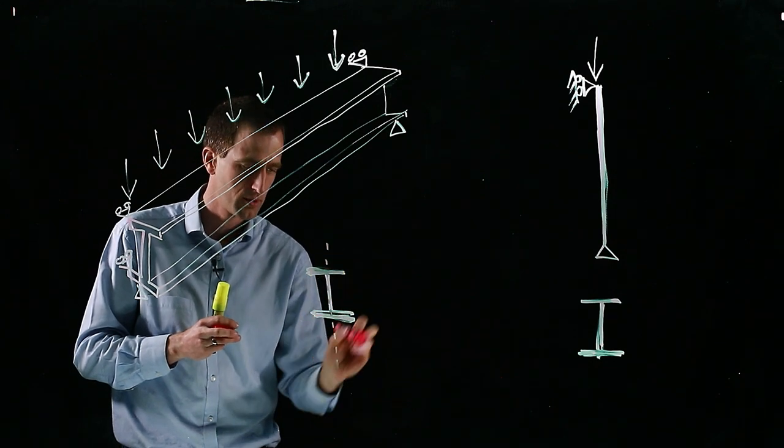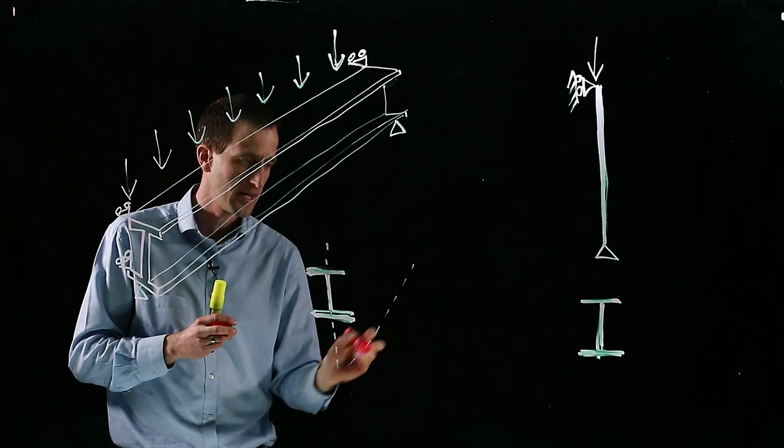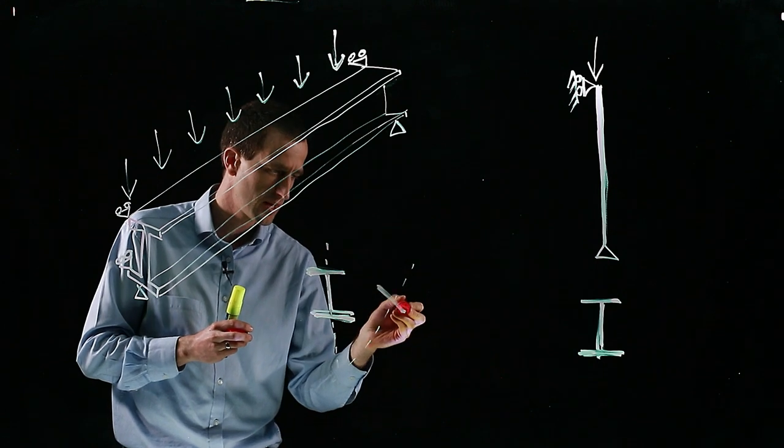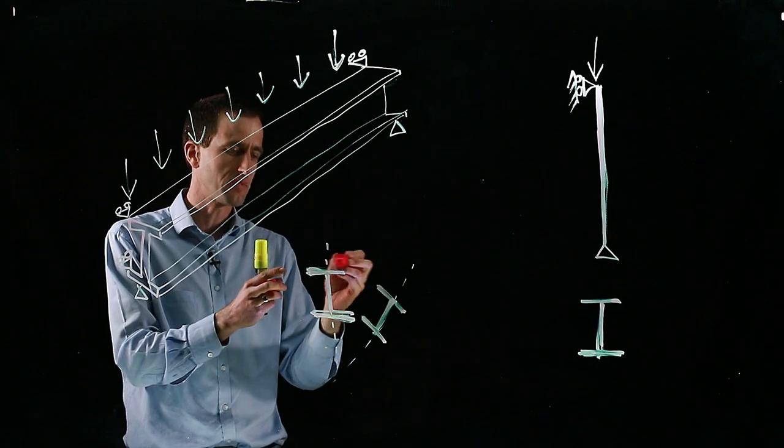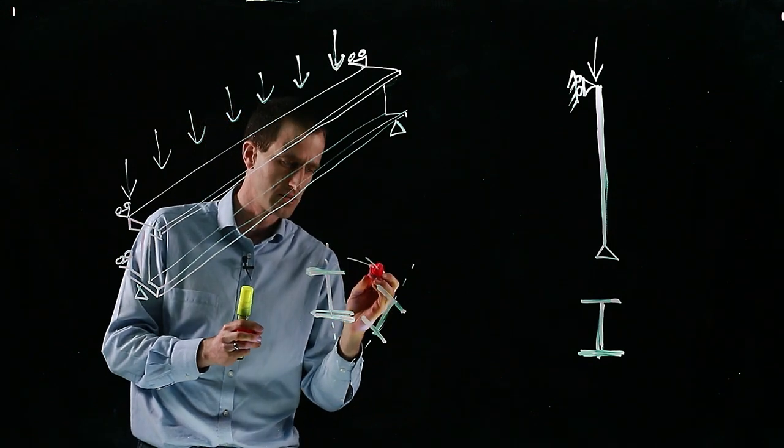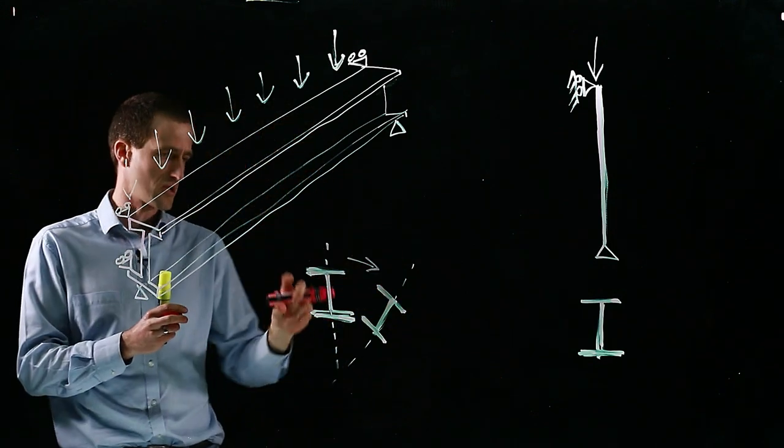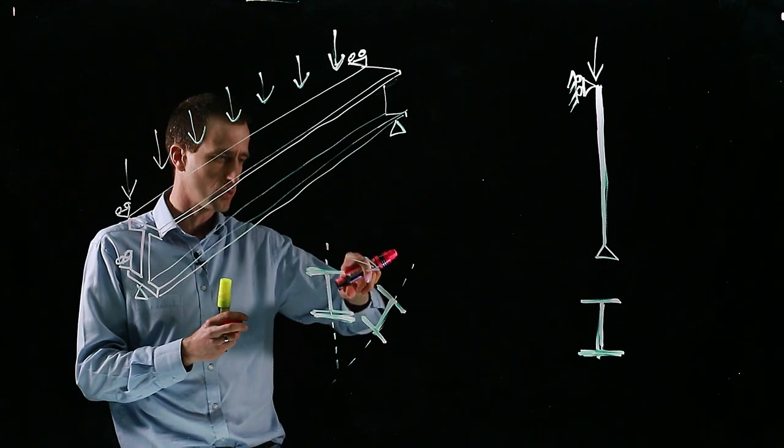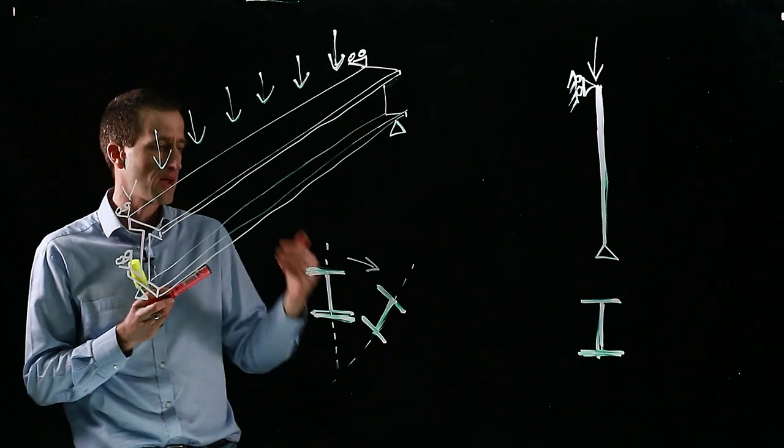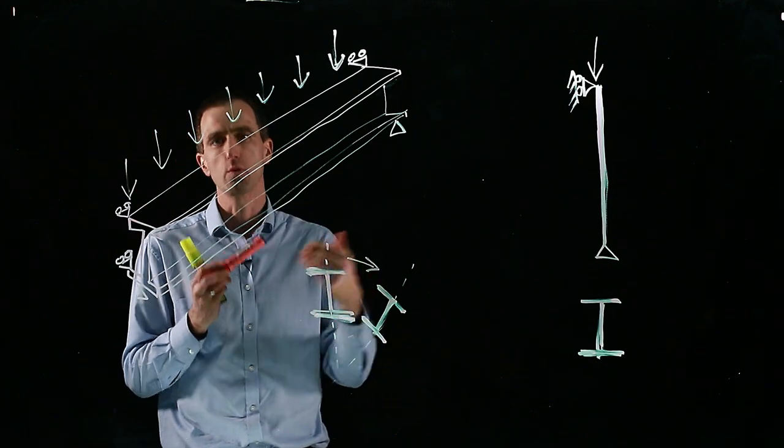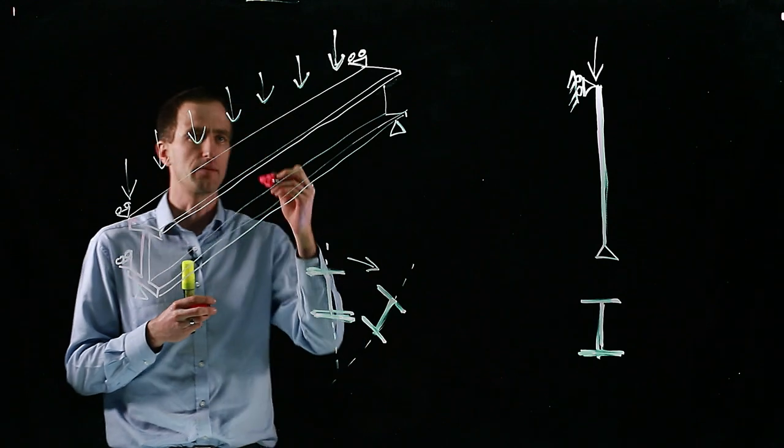So if I draw a diagram of what lateral torsional buckling looks like, it's basically that, where eventually this beam becomes unstable and then buckles sideways and then twists. So it's both a lateral movement and a torsional movement, a twist. And when it comes to design, both for ambient and fire temperature, we need to look at between where and where will it buckle.